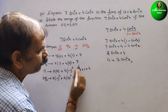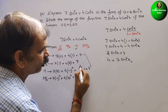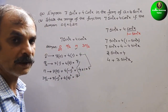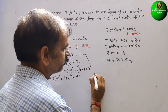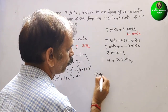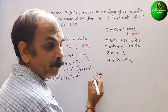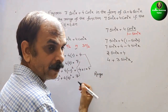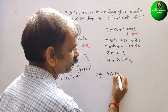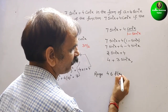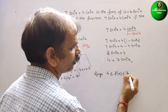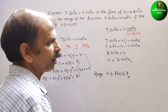Looking at all the values, we got a minimum of 4 and a maximum of 7. Therefore, the range of the function is 4 ≤ f(x) ≤ 7.